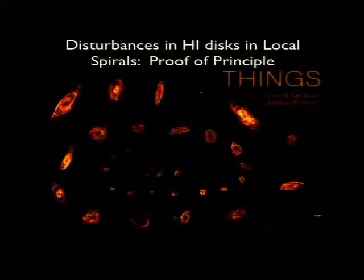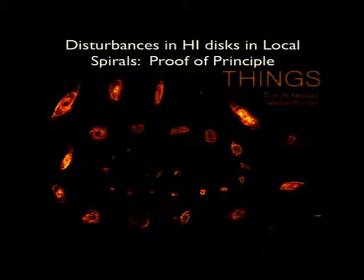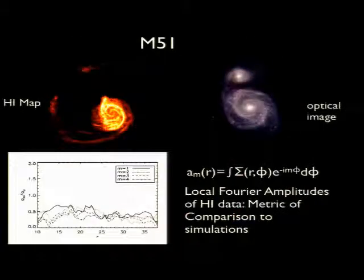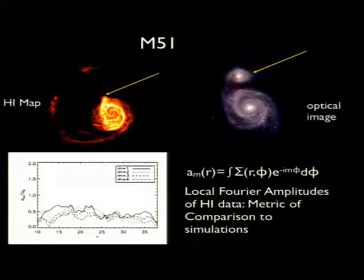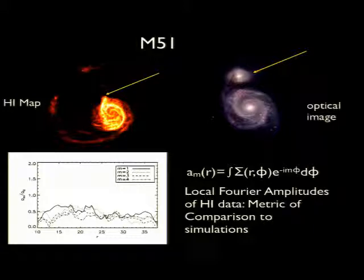For the proof of principle, I selected galaxies from the THINGS Survey, which produced H1 maps of about 40 galaxies in the local volume. I selected a couple with optically visible companions and sufficient data quality. M51 is a great example — this is the optical image of M51, and the satellite sits on the tip of the short arm. The idea is to run SPH simulations of an M51-like galaxy interacting with a satellite, finding the best fit between simulations and the projected gas surface density, specifically analyzing low-order Fourier amplitudes of the H1 map.